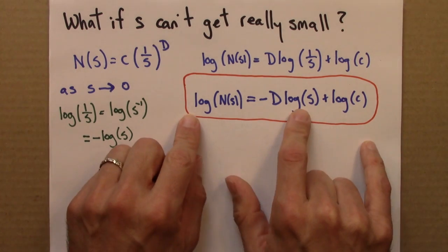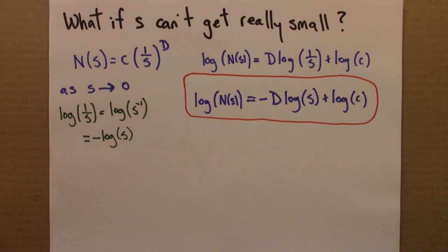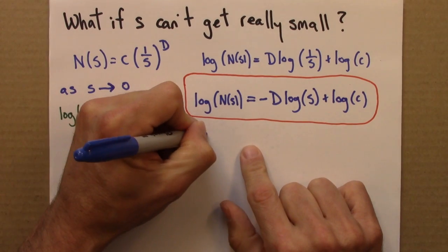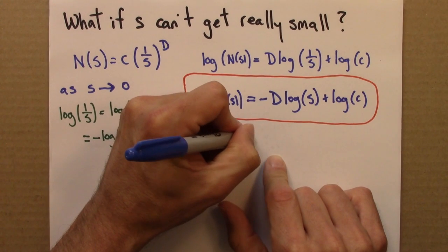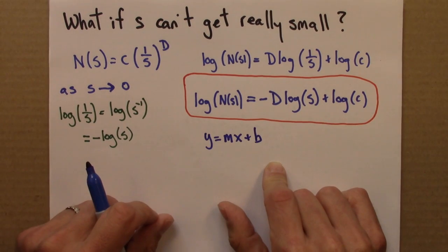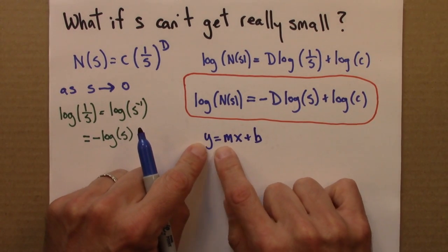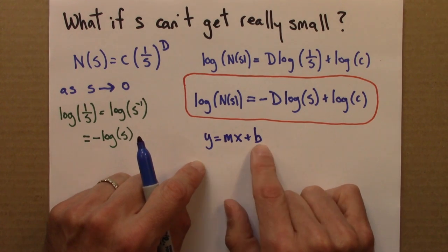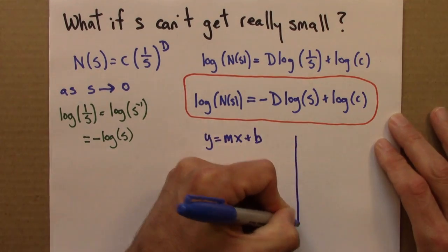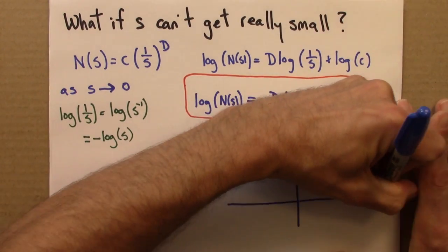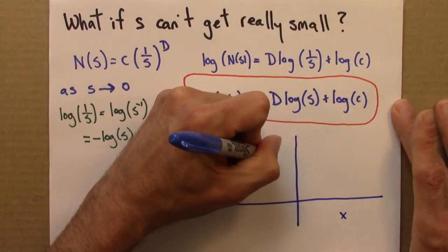It's sort of deep in disguise, but equation for a line is y equals mx plus b. So this relates x and y, m is the slope of the line, and b is the intercept.